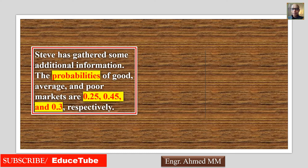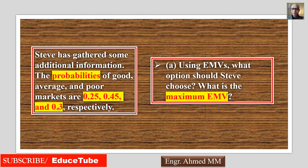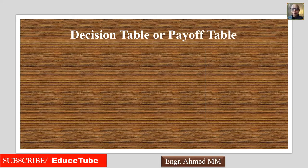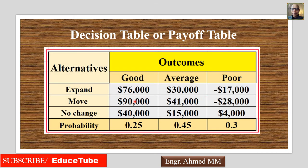We also need probabilities for good, average, and poor market conditions: 0.25, 0.45, and 0.30 respectively. With all this information we can build a decision table. Our target is to find the maximum expected monetary value. The decision table shows all three alternatives with their payoffs under good, average, and poor market conditions with probabilities 0.25, 0.45, and 0.30.